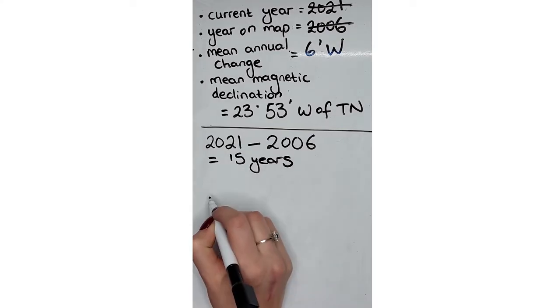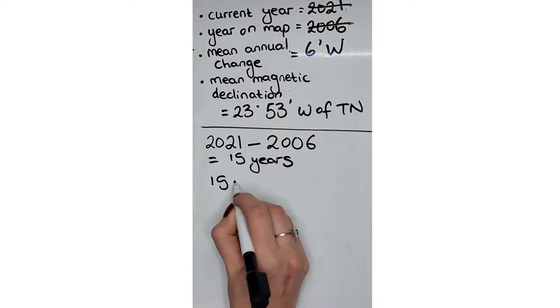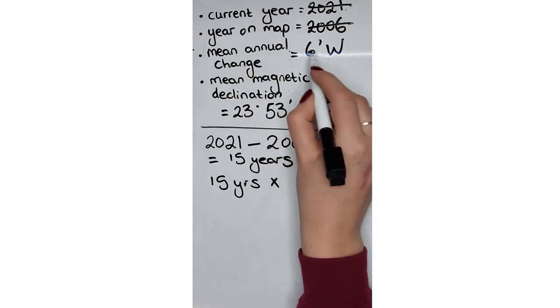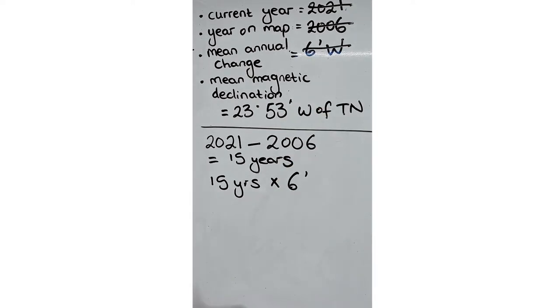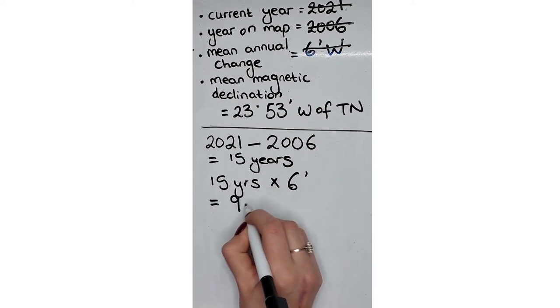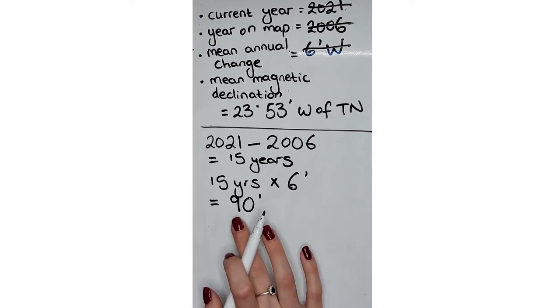Our next step is to take the difference in years and multiply it by our mean annual change: 15 years times six minutes west. This gives us an answer of 90.